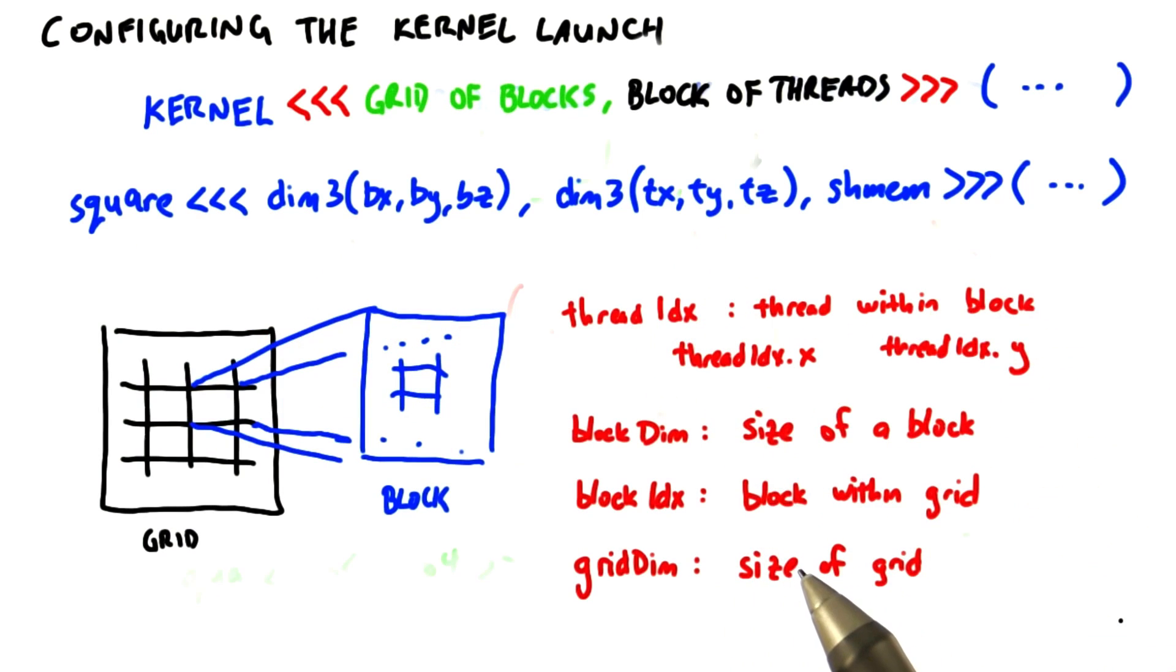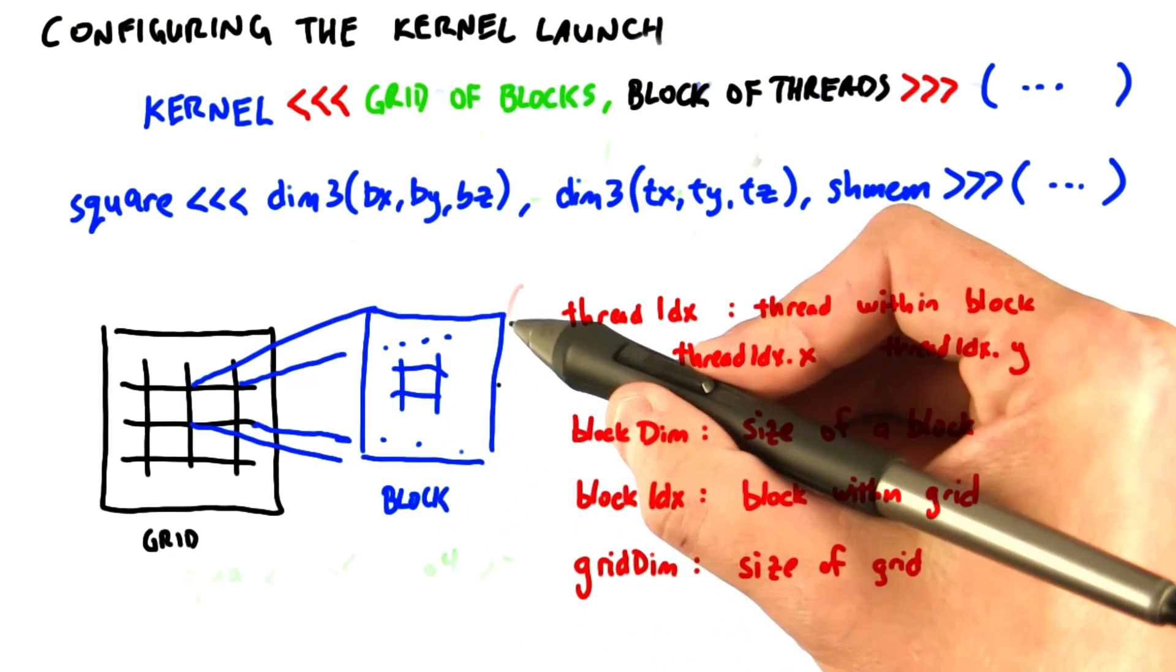One more important thing about blocks and threads. Recall from our square kernel that each thread knows its thread ID within a block. It actually knows many things. First is threadIdx, as we've seen, which thread it is within the block.